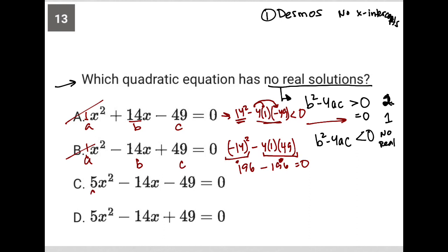For choice C, A is now 5, B is negative 14, and C is negative 49. So I could say, again, B squared, negative 14 squared, which we know is 196, minus 4 times A is 5, times C is negative 49. Once again, that's going to all be positive, so we're going to be adding to something else, so there's no chance that that's less than 0. So C is gone.